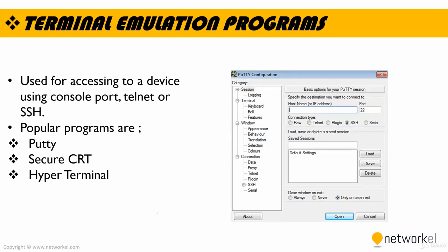If you want to reach devices remotely or via console port, you need to use a terminal emulation program. These programs are used for accessing a device using console, telnet, or SSH. Popular programs are PuTTY, SecureCRT, or HyperTerminal. In the picture, you see the PuTTY interface. For example, if you want to connect to a device using an SSH session, you choose SSH, type the host IP address, and when you click open, you open your SSH session. If you want to connect via Telnet, you choose that option. If you want to connect to a console port, you should choose the serial connection.